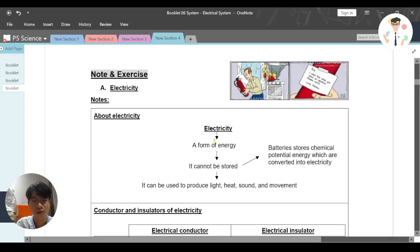First you need to understand that electricity is actually a form of energy that cannot be stored. And now I believe you might be asking how about batteries, and actually batteries store chemical potential energy which are converted into electricity. And this electricity can be used to produce light, heat, sound and movement. That's about electricity.